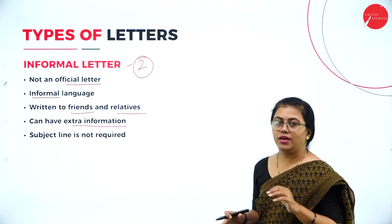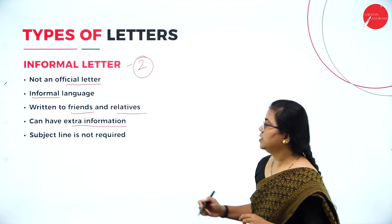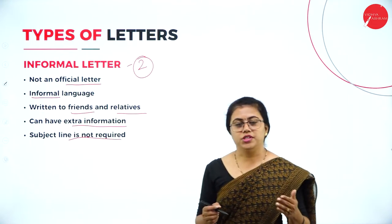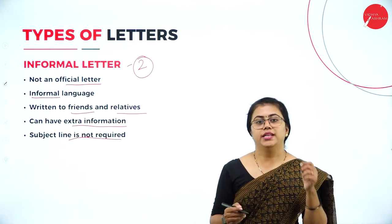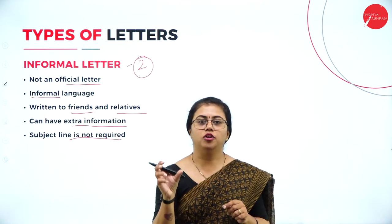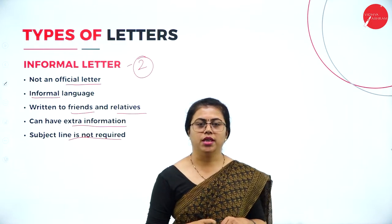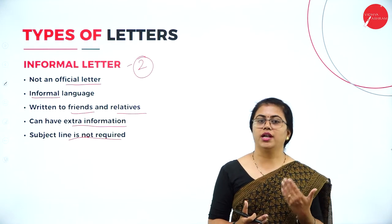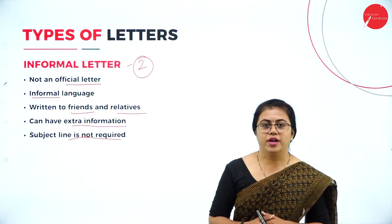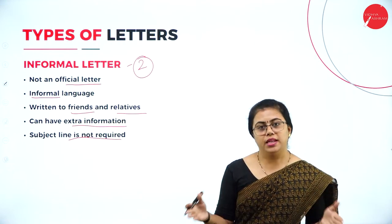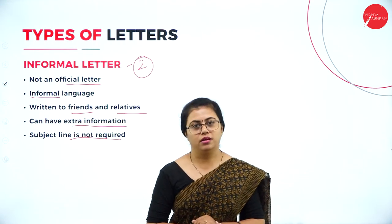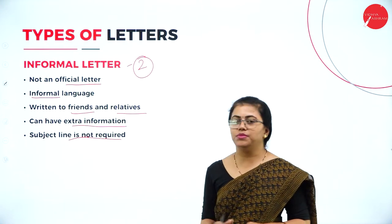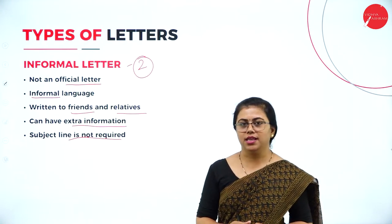In an informal letter, you can have extra information and a subject line is not required. In an official letter, a subject line is required to convey to the official what you are writing about. Whereas in an informal letter, since it has a lot of details and you are writing to friends or relatives with many issues and facts to include, there is no subject line required.